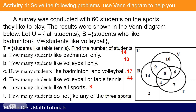Letter E: How many students like all sports? We look at the intersection of all three sets, and we have 8. Letter F: How many students do not like any of the three sports? The value 2 is placed outside the circles but inside the rectangle, meaning they are part of the universal set but do not play any of the three sports. So the answer is 2.